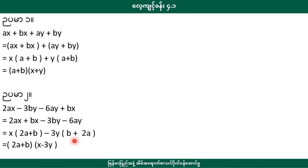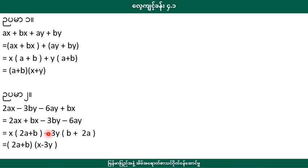Here we have 2a plus b. This is minus 3y is minus 3y. Here we have minus 3y plus b, minus 3y plus 1. This is minus 3y plus 2a plus minus 6y. This is a solution.